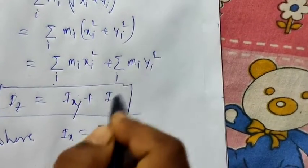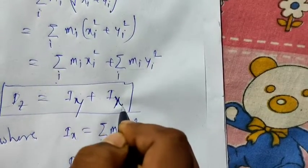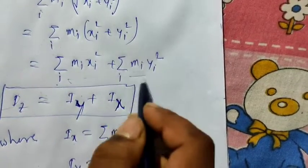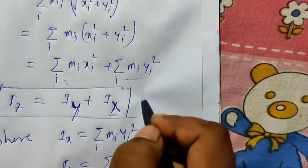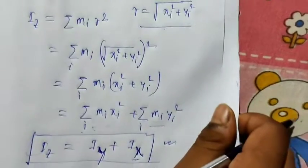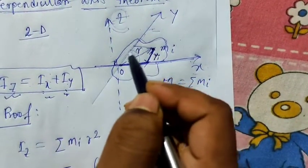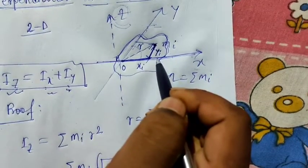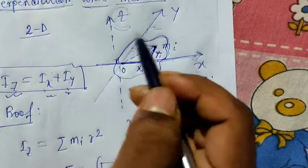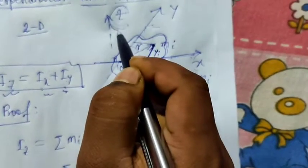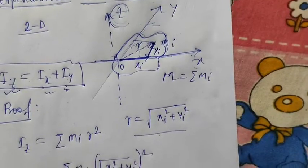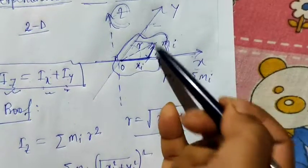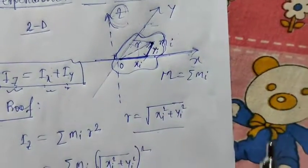The moment of inertia about the y-axis and the moment of inertia about the x-axis — together, if the body is planar, the moment of inertia about the perpendicular axis equals the sum of the moments about the x and y axes. This is the Perpendicular Axis Theorem: Iz = Ix + Iy.